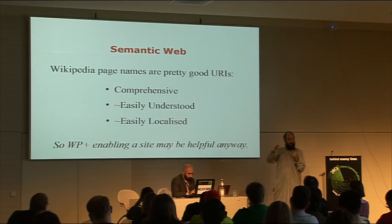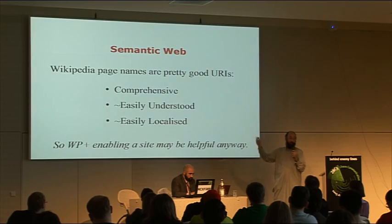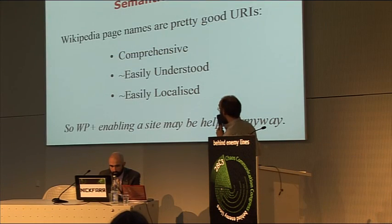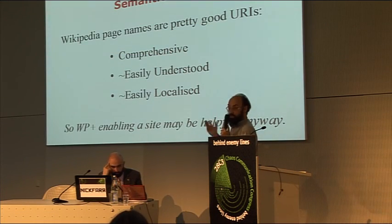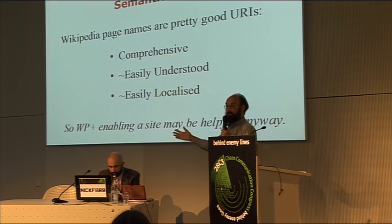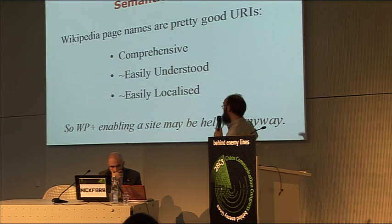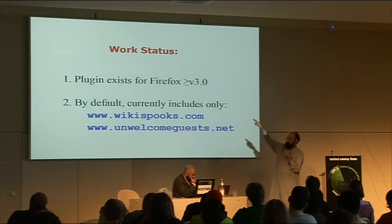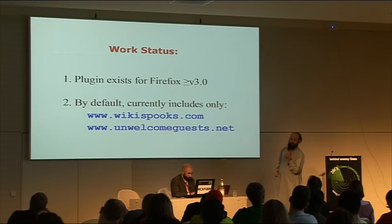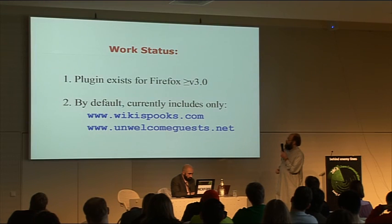What you're doing here is tying your website to a particular Wikipedia page. That does take some time, but it's got some value anyway, because it's effectively a URI — which Wikipedia has a lot of. They're pretty comprehensive and fairly self-documenting. Just go to the web page. They're easily localized, because there's a big list of foreign languages along the side. So you are getting your site ready for a semantic web.